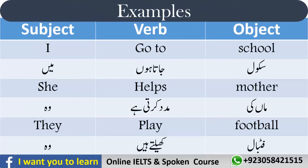کچھ examples دیکھ لیں تاکہ آپ کو پوری طرح سمجھ آ جائے۔ 'I go to school' — میں school جاتا ہوں۔ جب بھی 'میں' کی بات آئے تو آپ صرف اپنے بارے میں بات کریں گے۔ 'جانا' آپ کا verb ہے اور آپ کہاں جا رہے ہیں؟ School کی طرف — تو جس جگہ پر کام ہو رہا ہے، وہ object ہے۔ School آپ کا object ہے۔